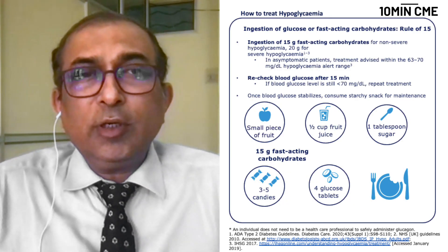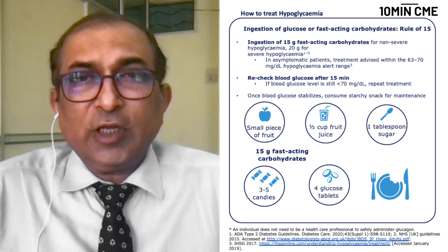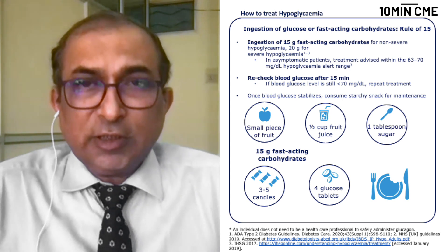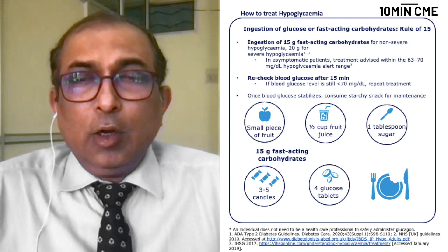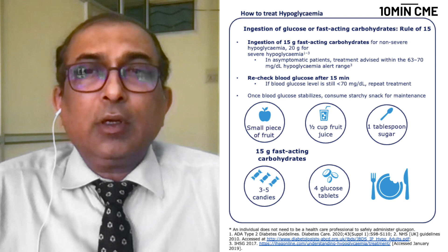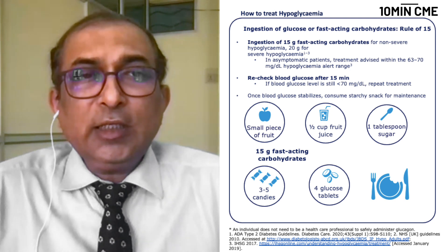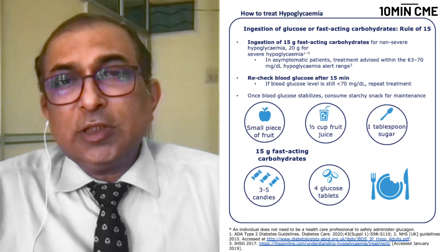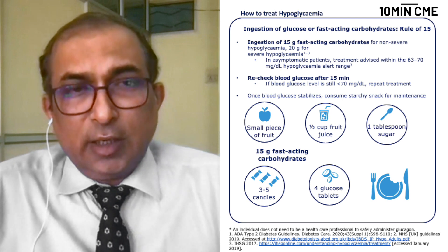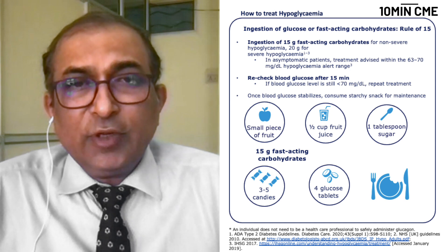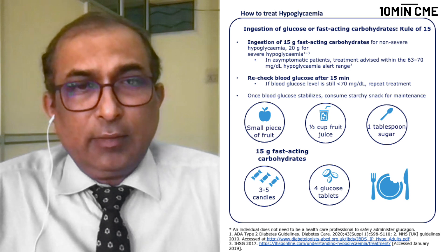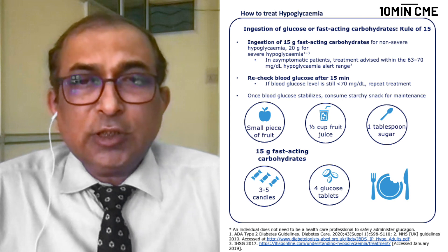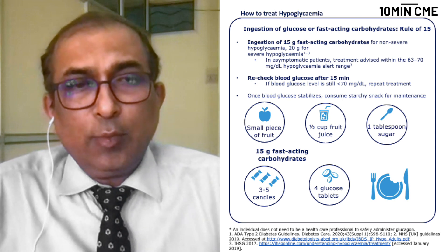When hypoglycemia occurs, it should be treated by ingestion of glucose or fast-acting carbohydrates. The rule of 15 applies: 15 grams of fast-acting carbohydrate for non-severe hypoglycemia, and 20 grams for severe hypoglycemia. In asymptomatic patients, treatment is advised when glucose levels are between 63 to 70 mg/dL — this is called the hypoglycemia alert range. Recheck blood glucose after 15 minutes; if still less than 70, repeat the treatment. Once blood glucose stabilizes, consume a starchy snack to maintain glucose levels.